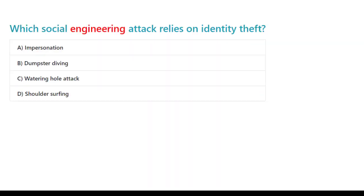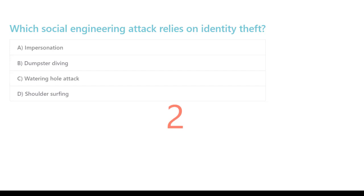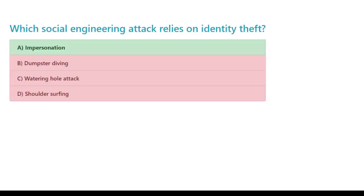Which social engineering attack relies on identity theft? A. Impersonation. B. Dumpster diving. C. Watering hole attack. D. Shoulder surfing. The correct answer is A. Impersonation.